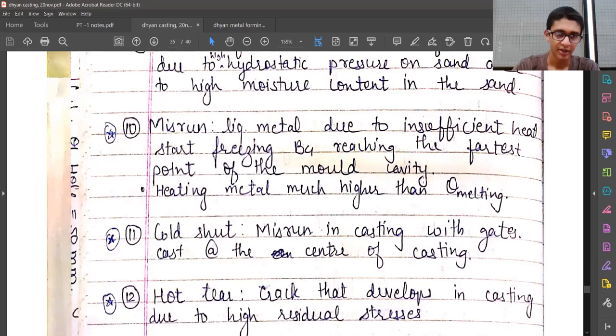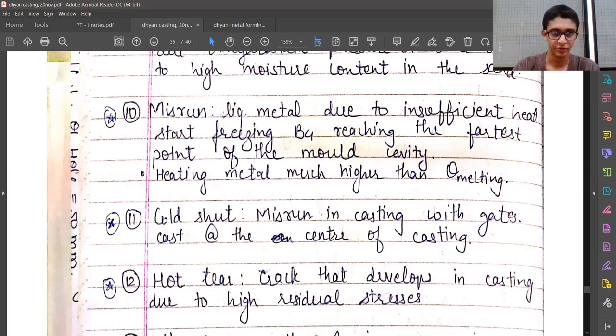The remedy is heating metal much higher than the melting point. We can think that since we have reached the melting point, the metal is in liquid form and we can pour. But while we are pouring, the liquid is going to lose its heat, so we should overheat the liquid metal to a sufficiently high temperature and then start pouring. So while pouring, even though it is going to lose some heat, till the liquid metal reaches the farthest point in the mold, it is not yet frozen—it is still in liquid form and can flow and reach all the corners of the mold.